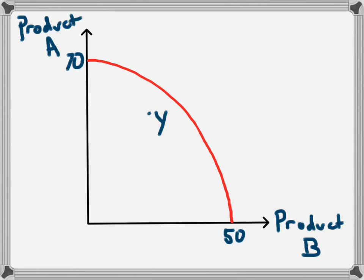We can use this diagram to explore a number of different economic concepts. The first is if the economy was producing at point Y — it is operating inside its production possibility frontier. This means that all of the resources of the economy are not being used efficiently. This could mean that there is unemployment in the economy, or resources which aren't being used.